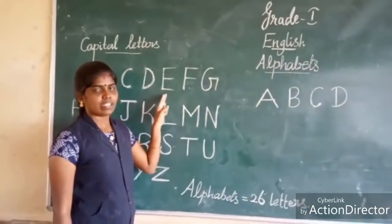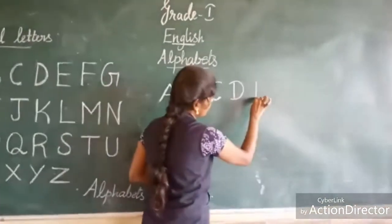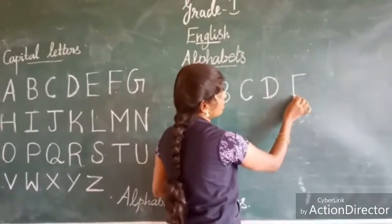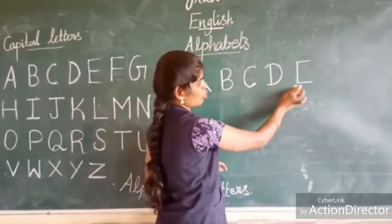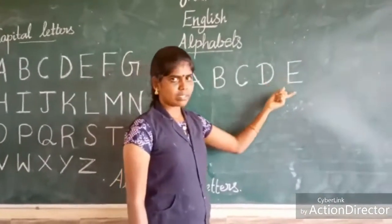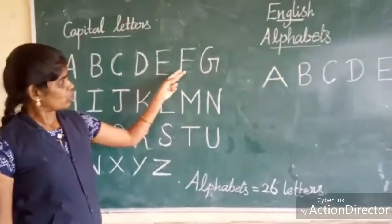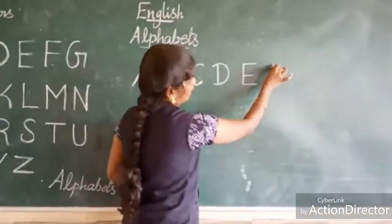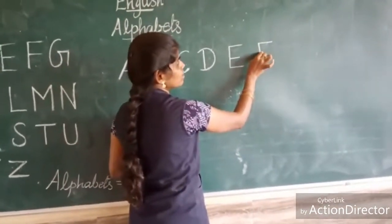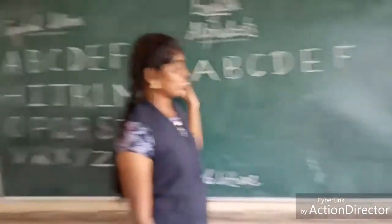Next letter is E. What letter is this? E. First, you have to write one standing line. Next, up one sleeping line, down one sleeping line. In the middle, one sleeping line. What letter is this? E. How to write E? One standing line, up one sleeping line, down one sleeping line, middle one sleeping line. This is E.